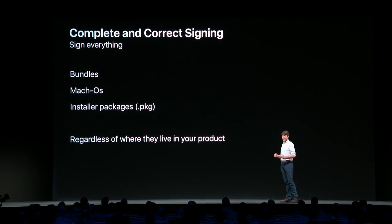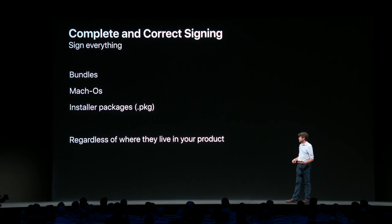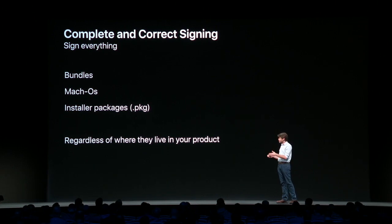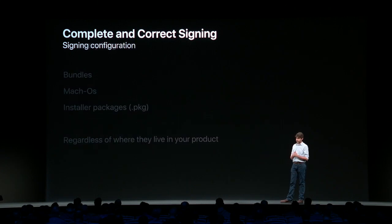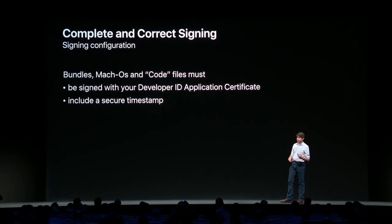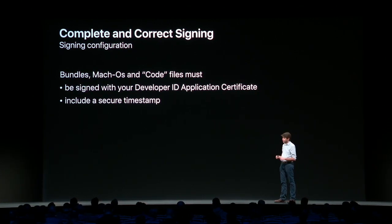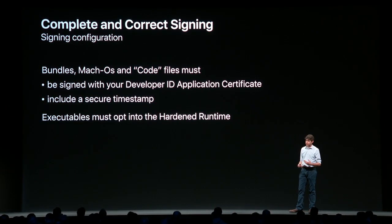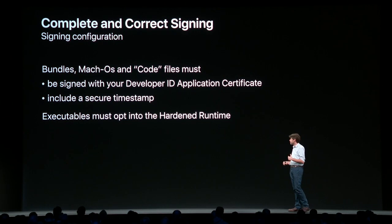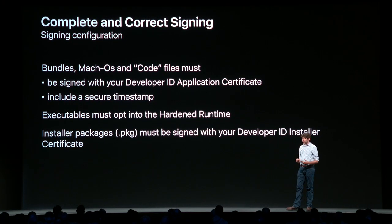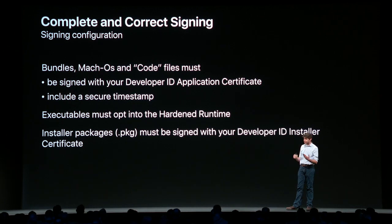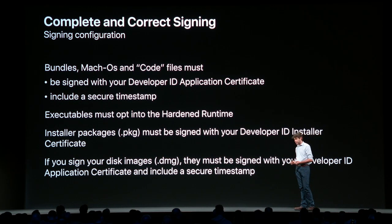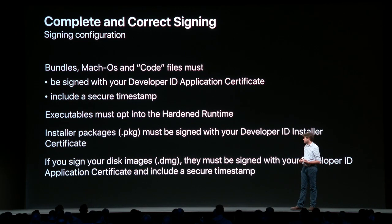To completely sign everything, you need to sign all bundles, Mach-O binaries, and installer packages, wherever they are — whether inside installer packages, inside bundles, anywhere within your product. To sign correctly, you must sign bundles, Mach-O binaries, and code with your developer ID application certificate and include a secure timestamp. For executables, they need to opt into the hardened runtime — you don't need to do so for dylibs, frameworks, or bundles, just executables. For installer packages, sign them with your developer ID installer certificate, which is different from your developer ID application certificate. If you sign disk images to avoid Gatekeeper path randomization, those must also be signed with your developer ID application certificate and include a secure timestamp.